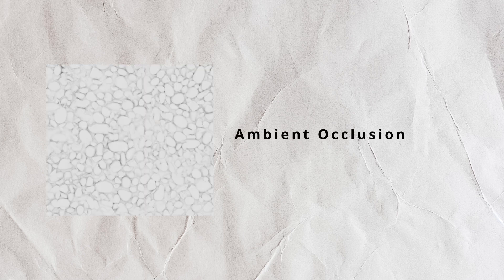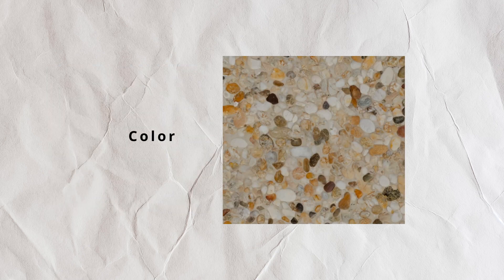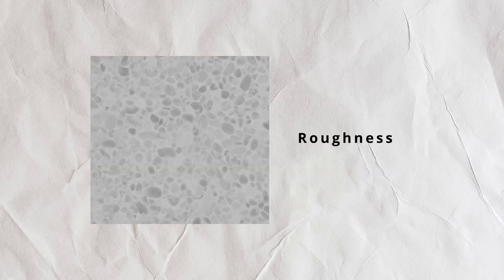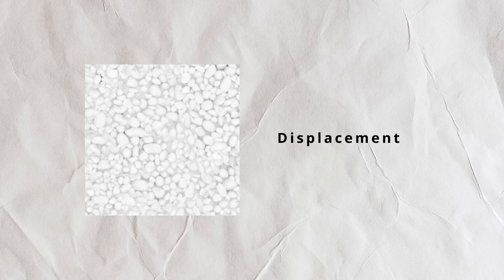Briefly summarized: AO is like a shading map where darker areas appear wherever objects, such as stones, are close to each other. The color map is ideally an image photographed without shadows and without noticeable depth. Then we have the roughness map, which shows the roughness of the surface.